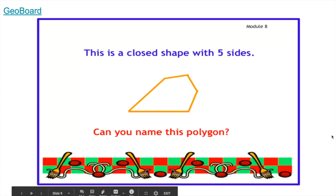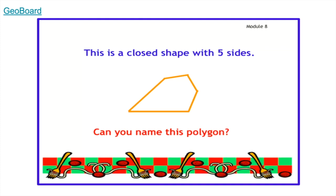For this part of the lesson, I would like to make it a little more interactive. I would like you to grab anything that has straight sides — maybe some pencils, markers, crayons, or maybe spaghetti. Anything you can think of that has straight sides. You can pause the video. So this is a closed shape with five sides. With your tools, I would like you to make a shape with five sides. Can you name this polygon?